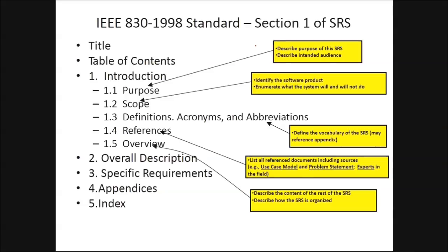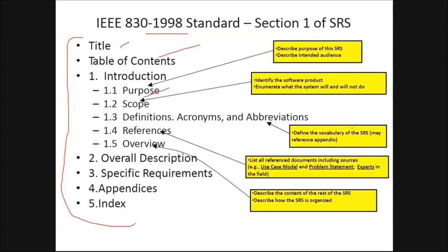For that we have the IEEE 830-1998 standard. These are the headings of the standard — for example, title, table of contents, and in the introduction: purpose, scope, definitions, acronyms, abbreviations, references, and overview. The purpose describes the intent of the SRS and its intended audience. The scope identifies the software product and enumerates what the system will and will not do. Definitions and acronyms define the vocabulary, references list all references, and the overview describes how the SRS is organized.